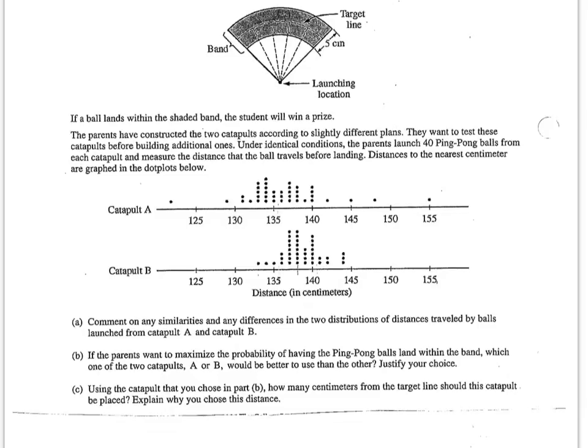And that's exactly what Part C is asking me. It's saying, using the catapult that you choose in Part B, how many centimeters from the target line should this catapult be placed? Well, I'm going to place the catapult wherever the center is of my distribution for how far I'm launching balls from the catapult. So it looks like the median is about 138 centimeters for catapult B.